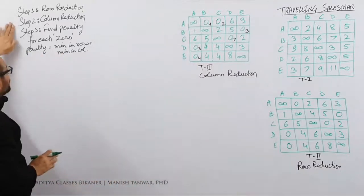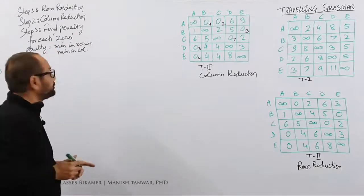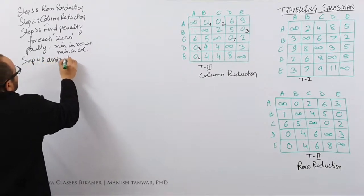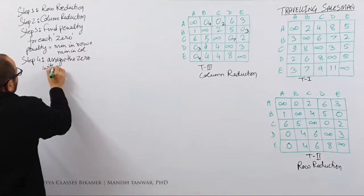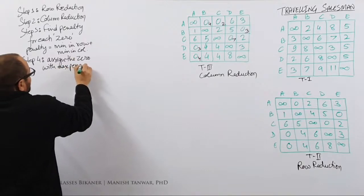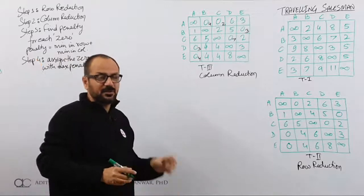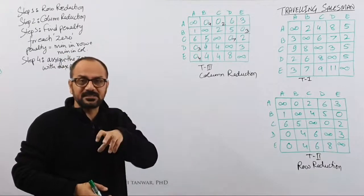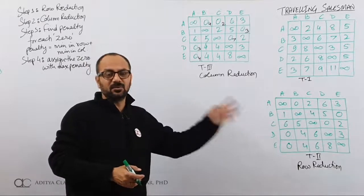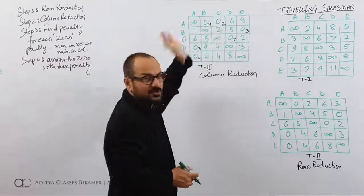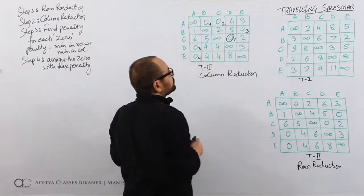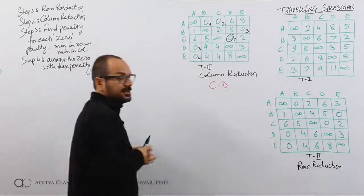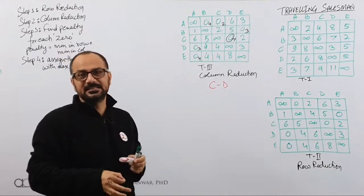Step 4 is to assign the zero with maximum penalty. As in transportation, the maximum penalty should be avoided, so we assign that zero first. The maximum penalty is 7, so this becomes our assignment. The assignment is C to D — whenever the salesman lands in city C, he is always going to D.